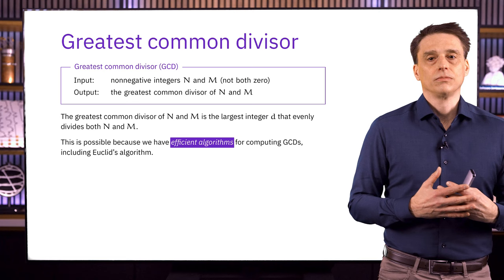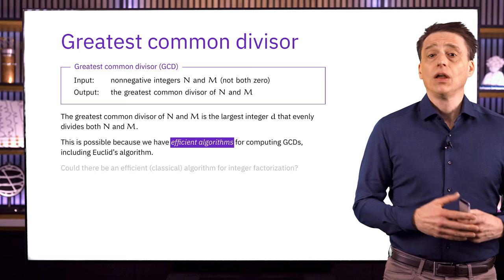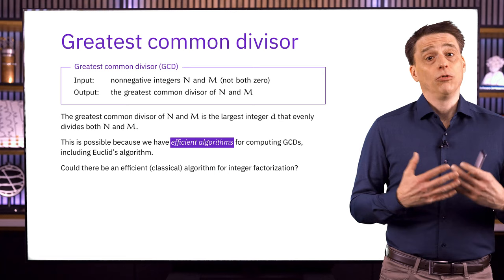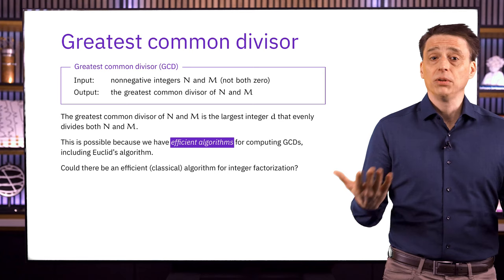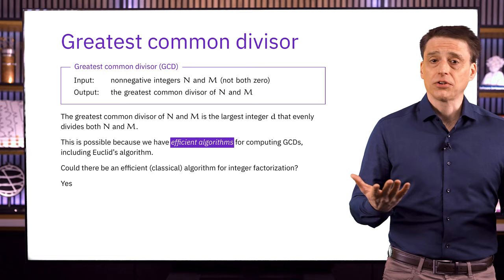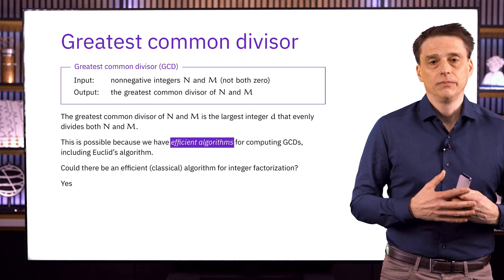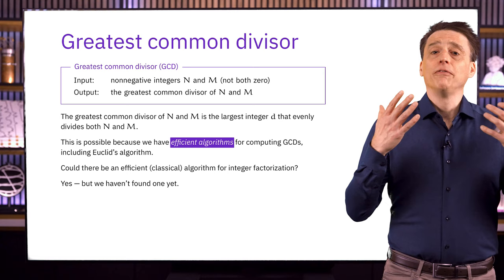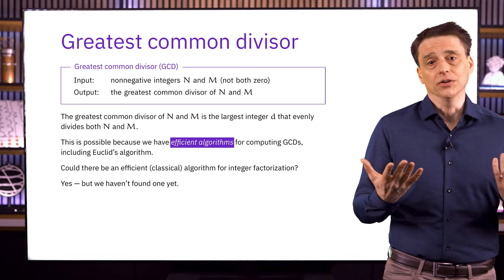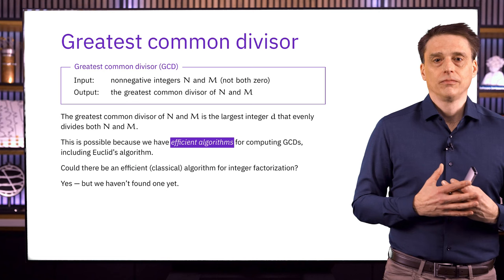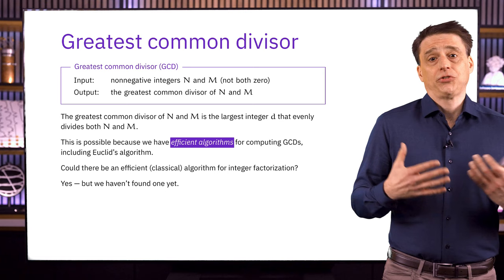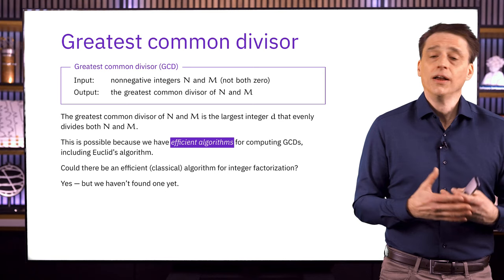That leads to another question: could there be an efficient classical algorithm for integer factorization that would allow us to factor numbers like RSA 1024 in the blink of an eye? The answer is yes, absolutely — there could be an efficient classical algorithm for factoring, and currently we don't know any way to rule out that possibility. All that we can say is that we haven't found one yet. Efficient GCD algorithms just don't work that way — they don't search for a greatest common divisor. They effectively just build it with a mechanical procedure that's roughly comparable in cost to multiplying the same two numbers together.